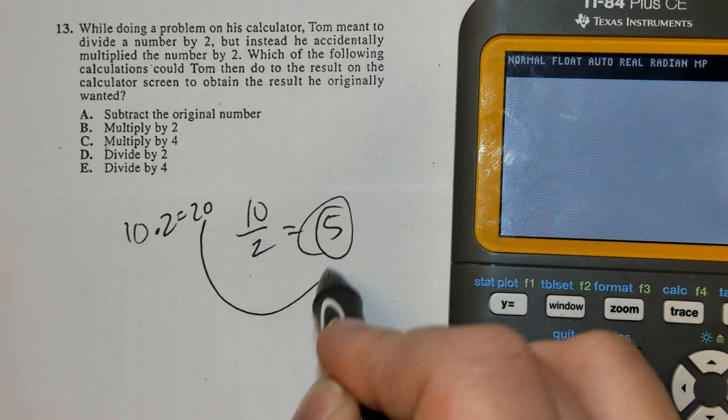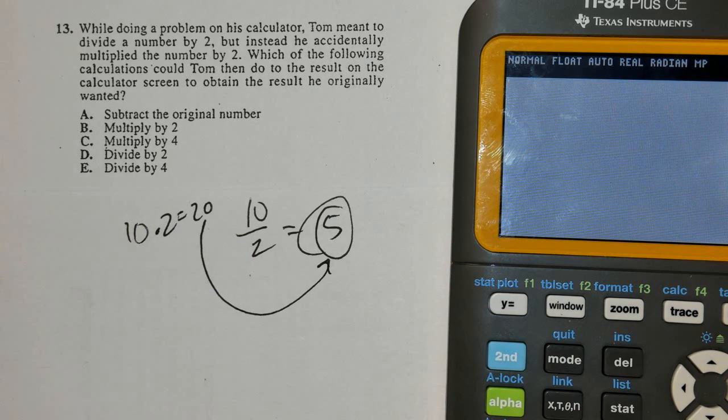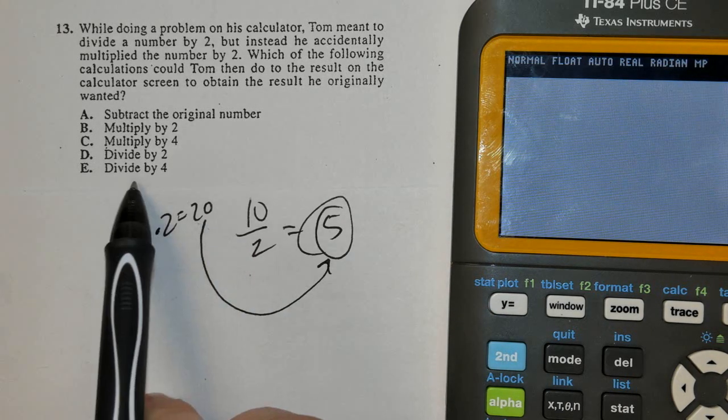How do I get 20 back to the correct answer of 5? Divide by 4. Correct answer is E.